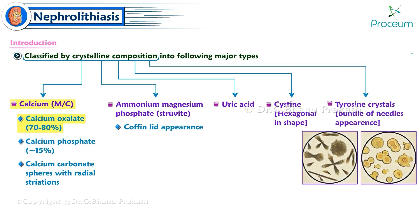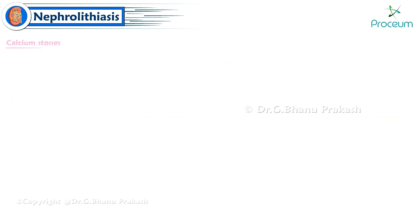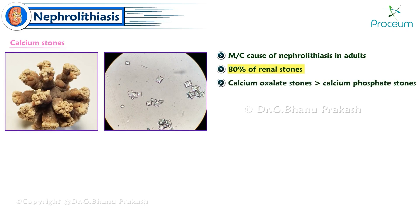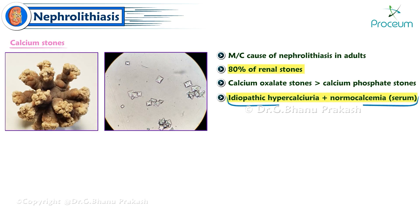Calcium stones are the most common cause of nephrolithiasis in adults, representing 80% of renal stones. Of patients with calcium stones, calcium oxalate stones are more common than calcium phosphate stones. Idiopathic hypercalciuria in the setting of normal calcemia is the most common combination of urine and serum calcium levels in patients presenting with calcium stones.